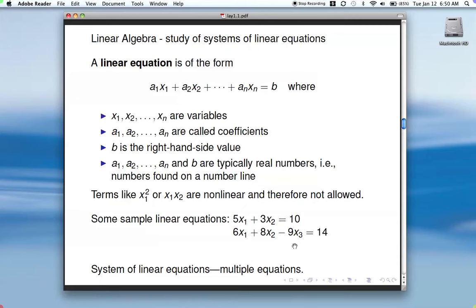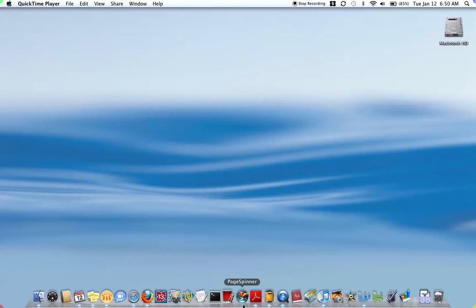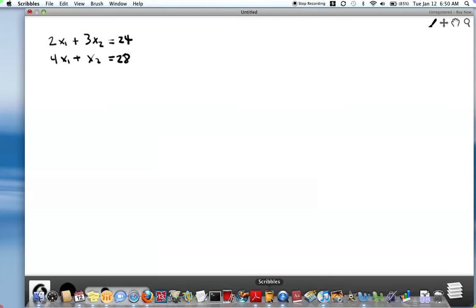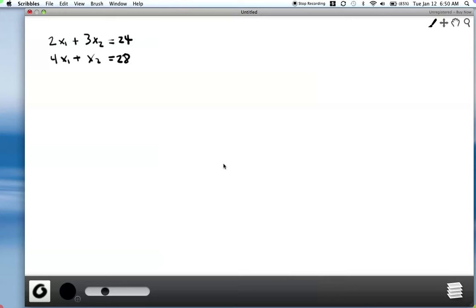So we're back to what is linear algebra. So we've talked about what's a linear equation. And linear algebra is a study of systems of linear equations. So what's a system? That just means you have multiple equations. So for example, let's go to the drawing board. Here's a system of two equations and two unknowns. And all of you have had college algebra, so you're familiar with a system of this form.